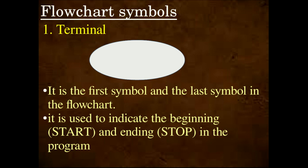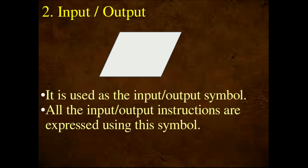The first symbol is the terminal symbol — oval shape or ellipse shape. Second is Input-Output. The input-output symbol is a rhombus shape. This symbol indicates the input and output representation. All the input-output instructions are expressed using this rhombus symbol.